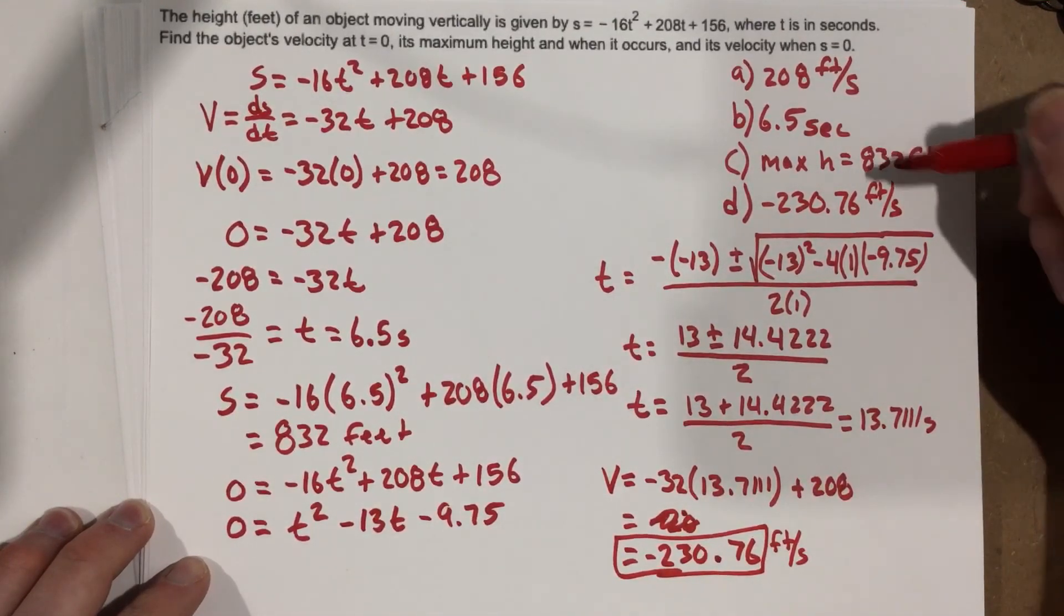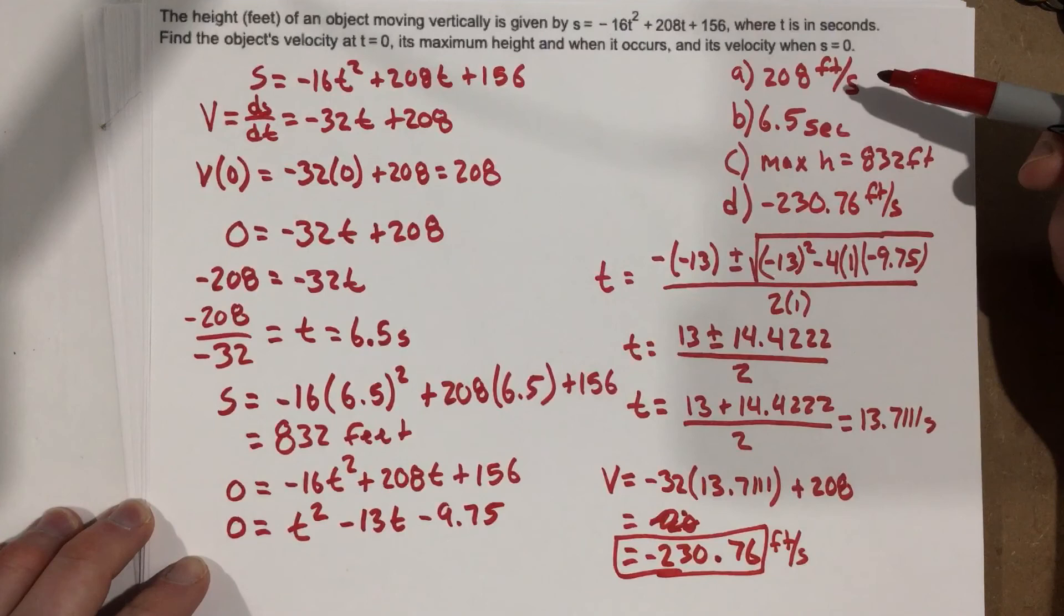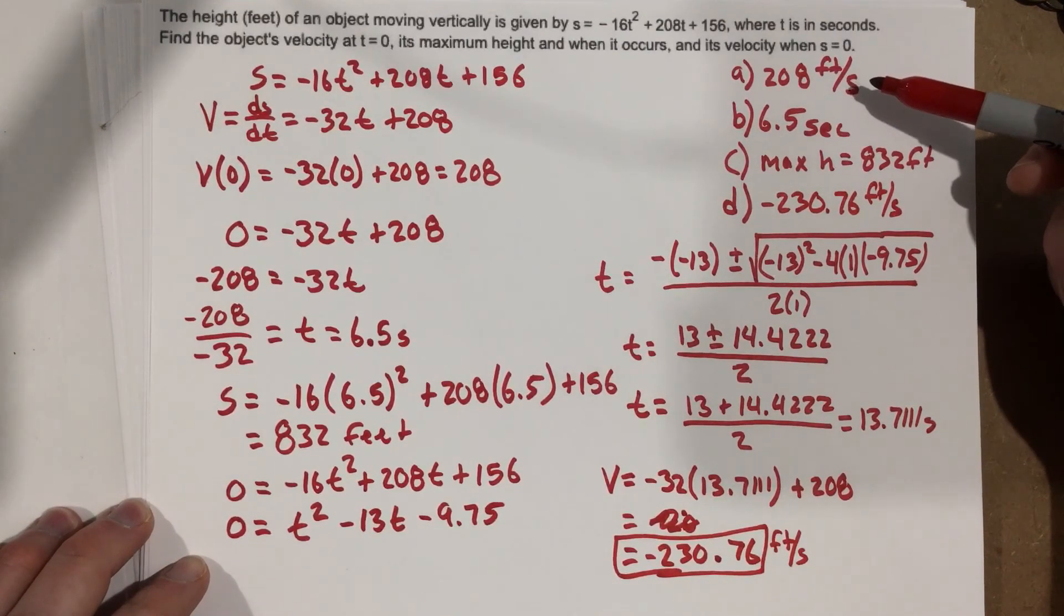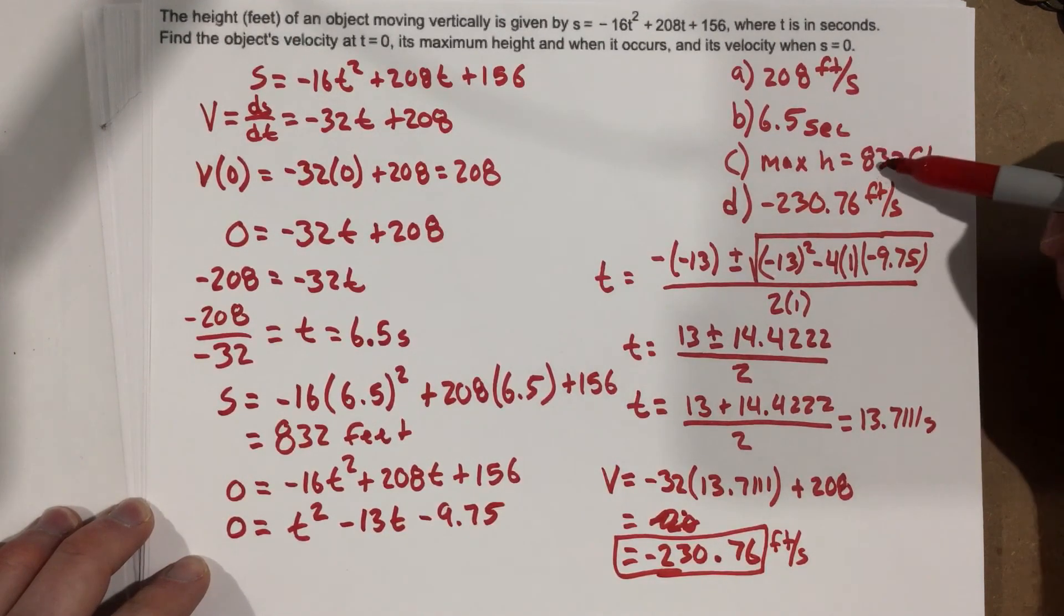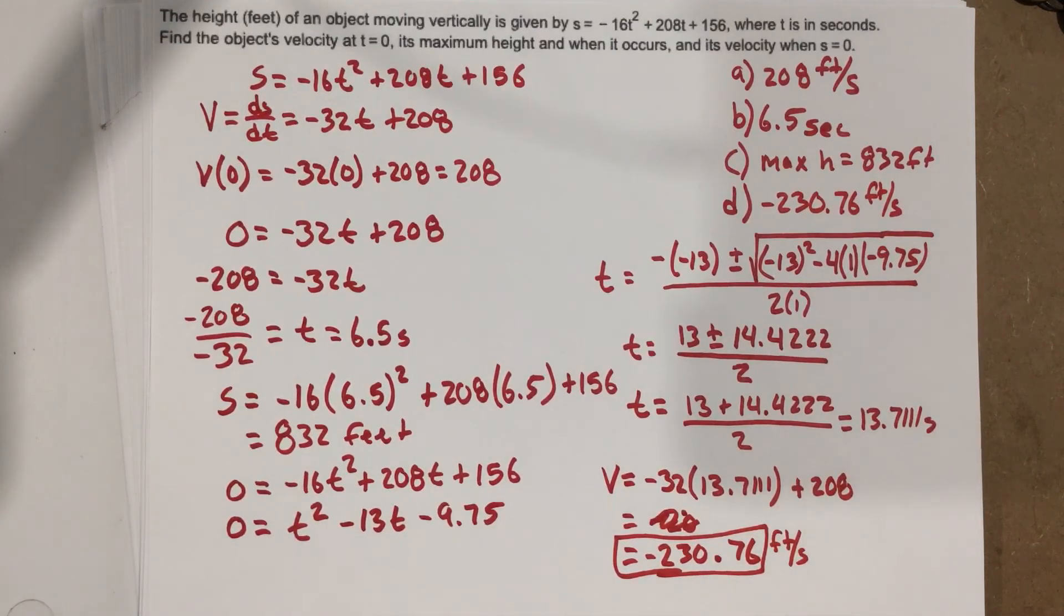And so our part D is negative 230.76 feet per second. So that's A, B, C, and D. Finding our 208 feet per second was, that's the velocity. That gave us the time that it took to reach our max height. That's our max height, and that's our velocity when S is zero.